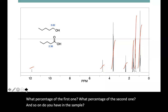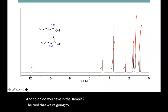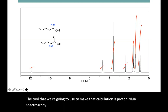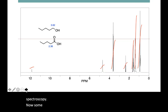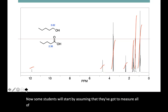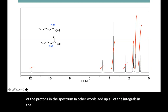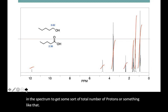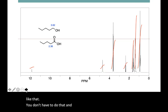The tool that we're going to use to make that calculation is proton NMR spectroscopy. Now some students will start by assuming that they've got to measure all of the protons in the spectrum — in other words, add up all of the integrals in the spectrum to get some sort of total number of protons. You don't have to do that, and it usually doesn't work out very well.